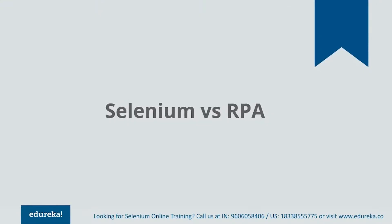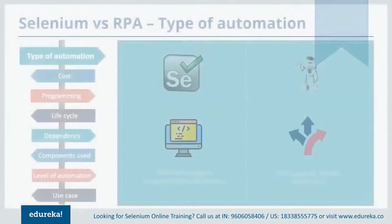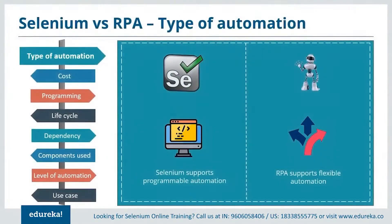Let's start by comparing the type of automation. Selenium supports programmable automation, whereas RPA supports flexible automation. Programmable automation can be used to change the sequence of any operation based on user requirements, whereas flexible automation is a hybrid of fixed and programmable automation.